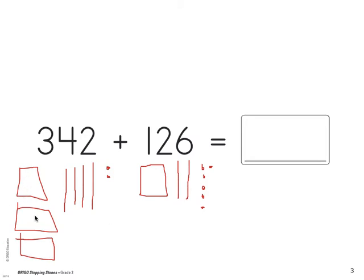So I have 100, 200, 300, 400. So I have four hundreds blocks. So that means a four goes in the hundreds spot. All right, so next I'm going to count my tens. Ready? 10, 20, 30, 40, 50, 60. Six tens.